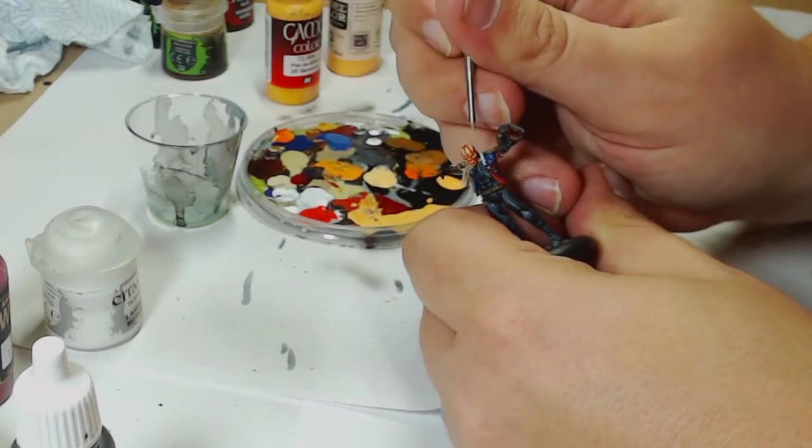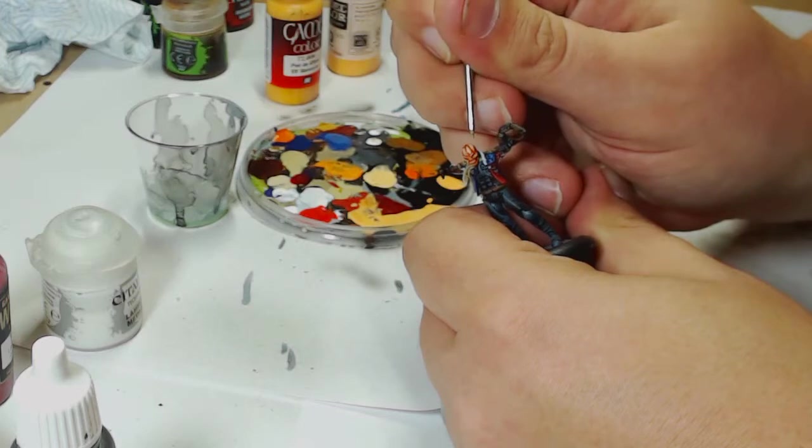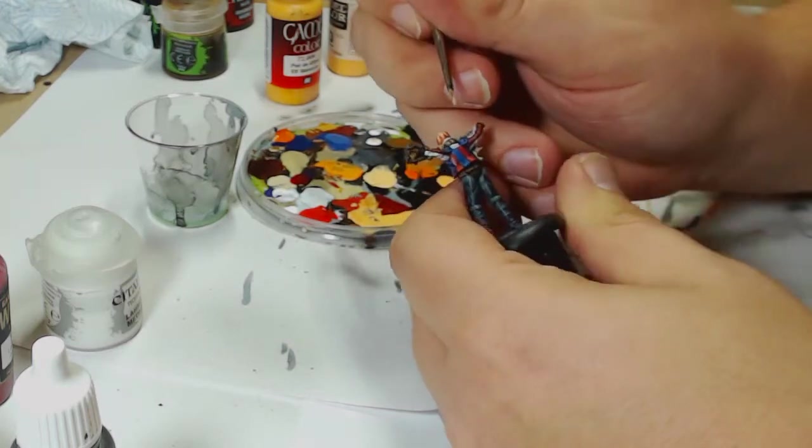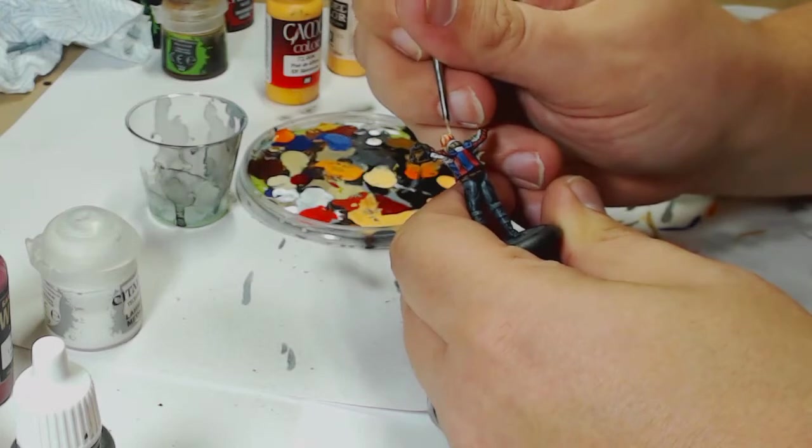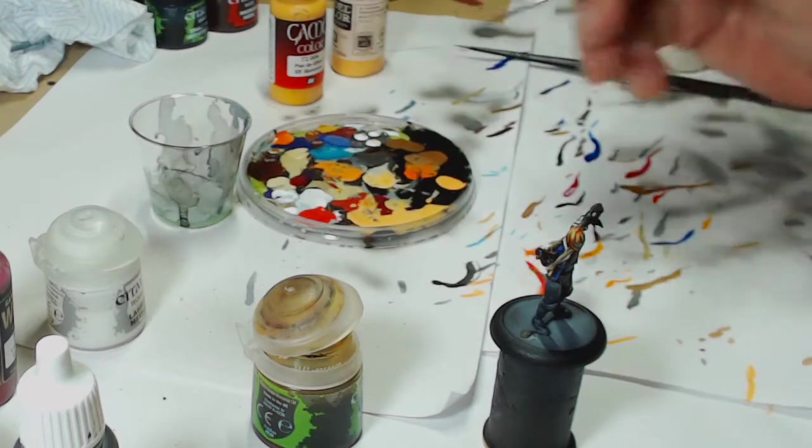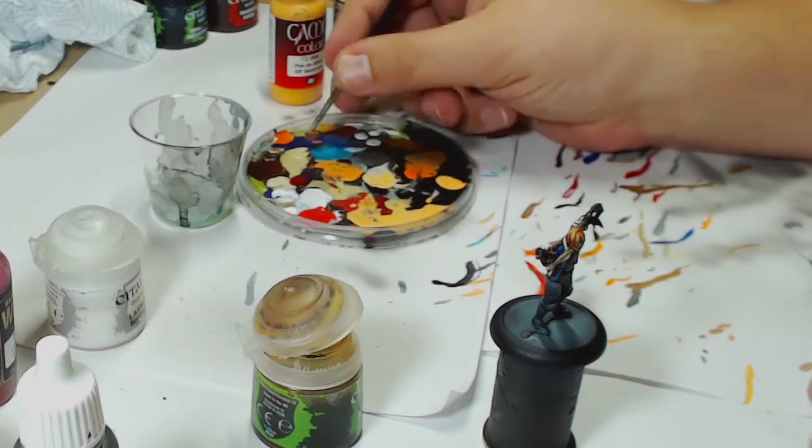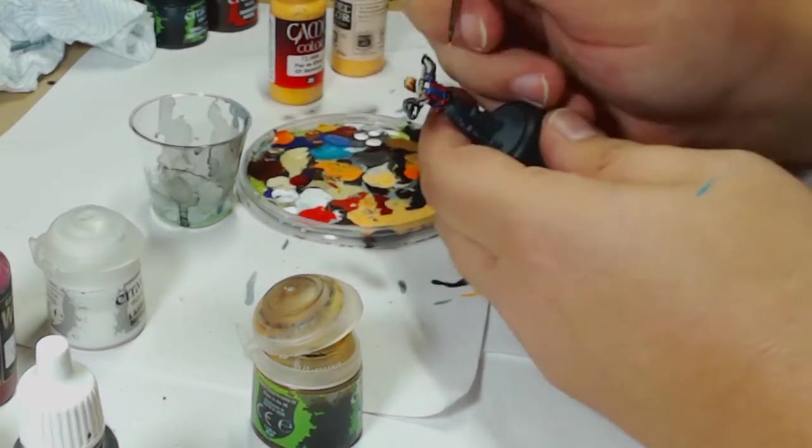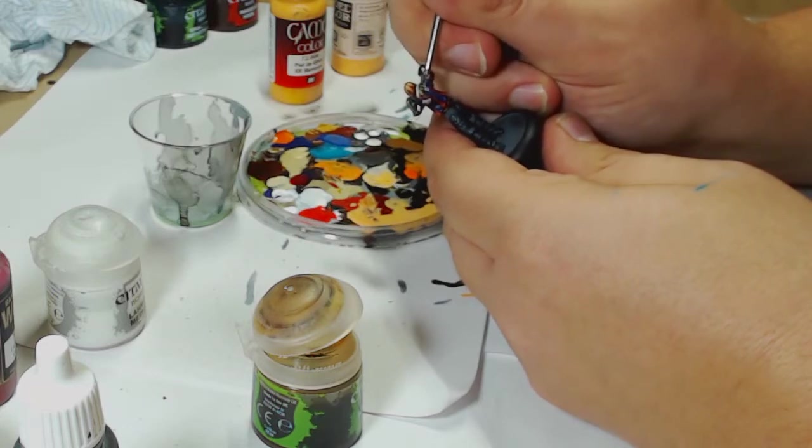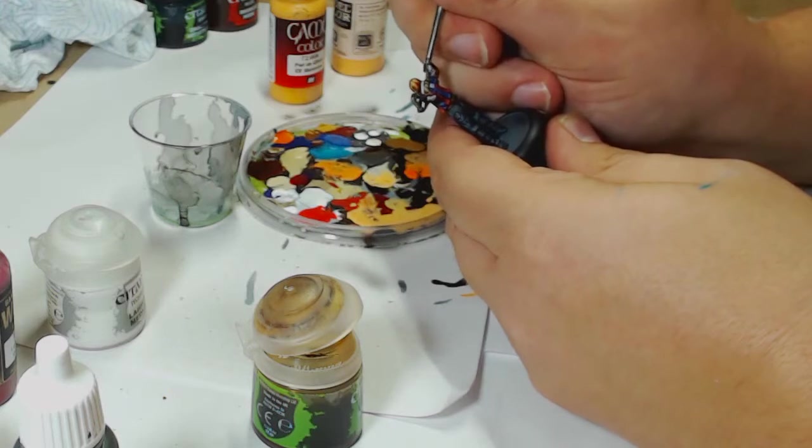And I've just put a touch of Agrax onto the fig, onto his face. And I'm just finishing off the bindings on his axe in the same way that I finished off the scarf.